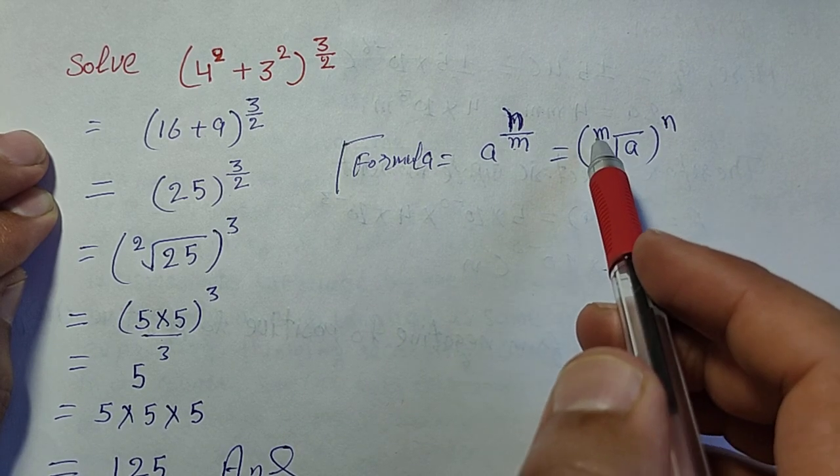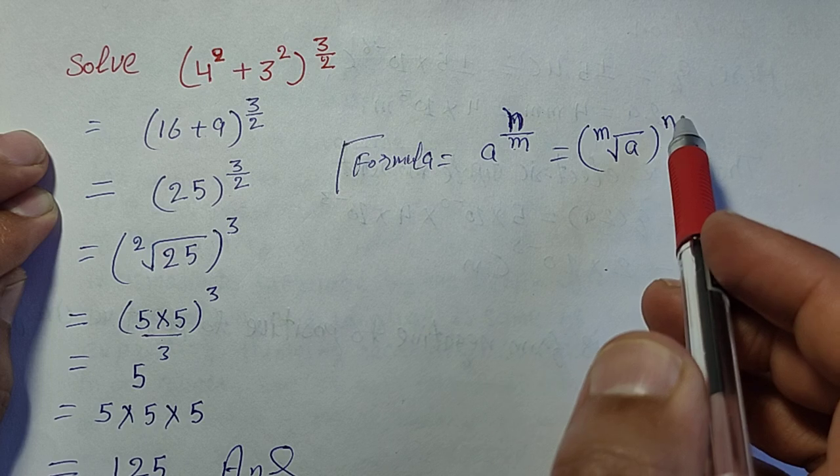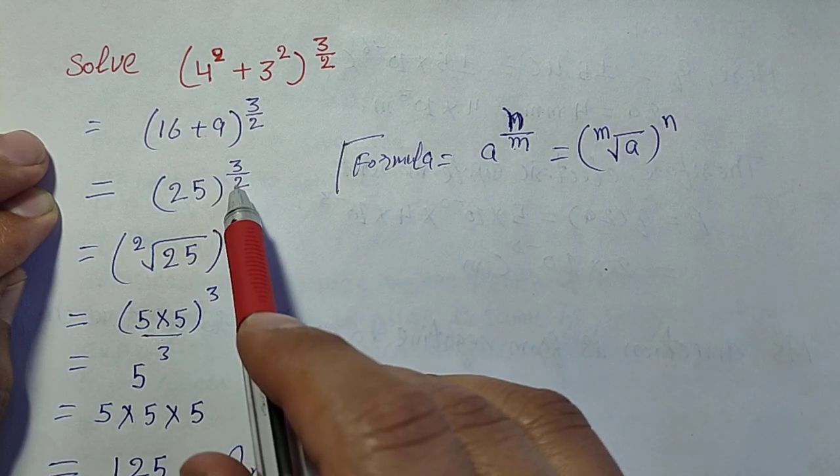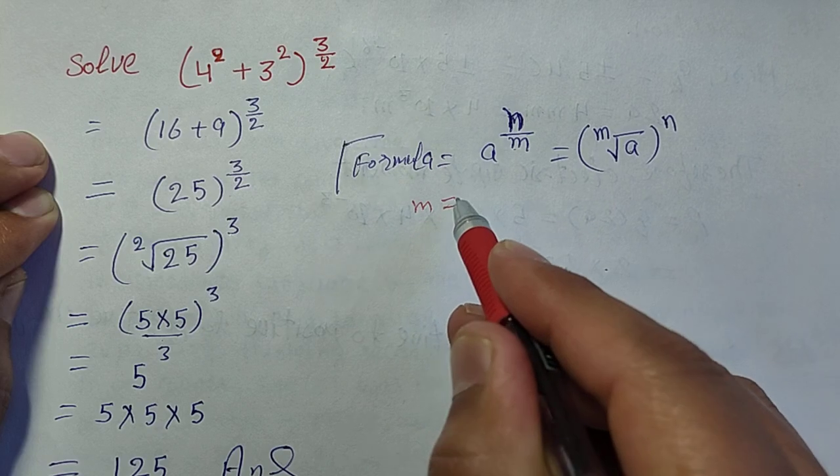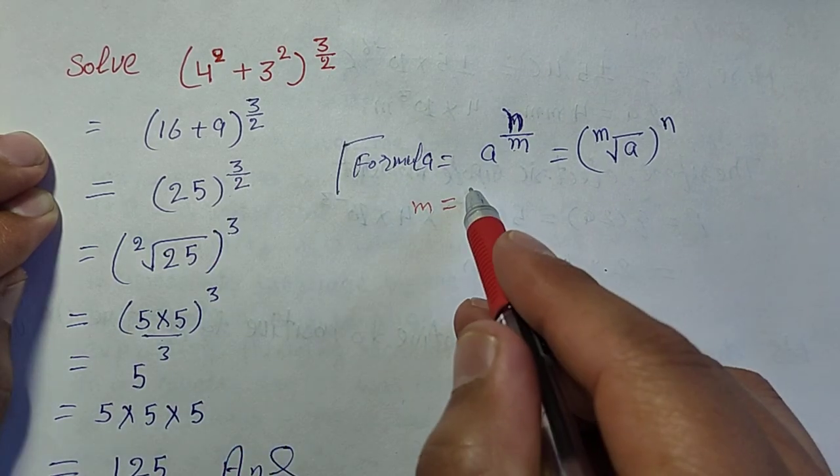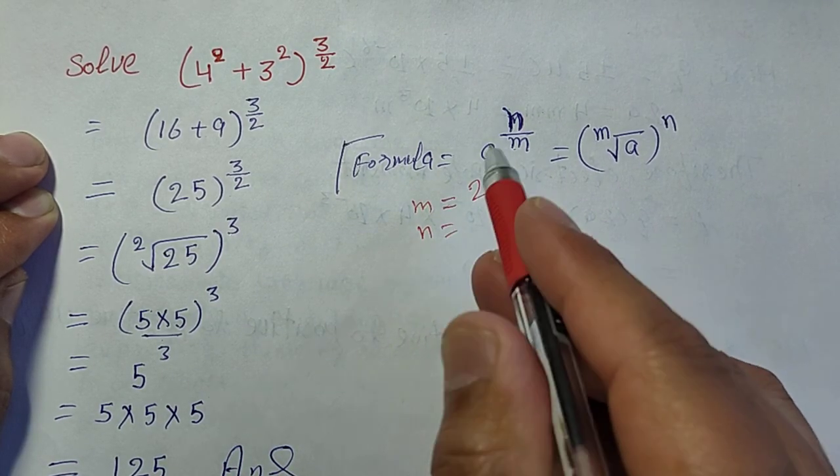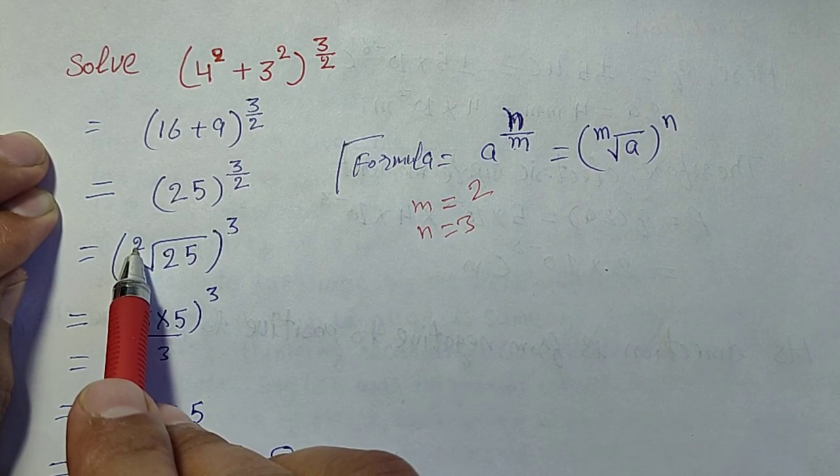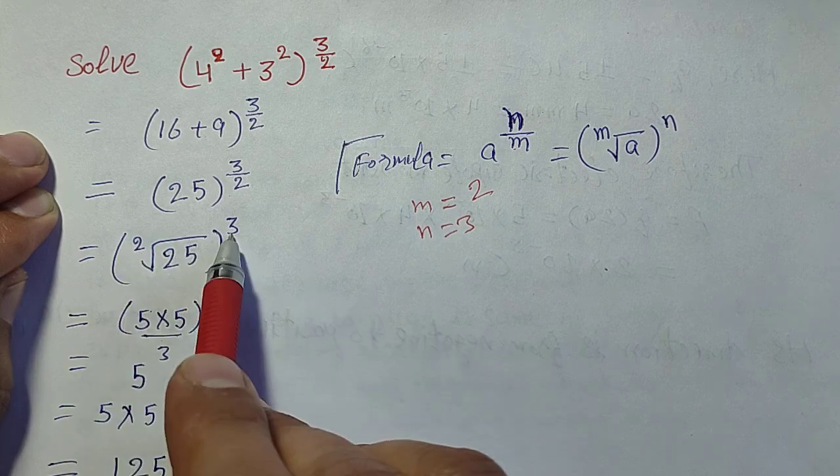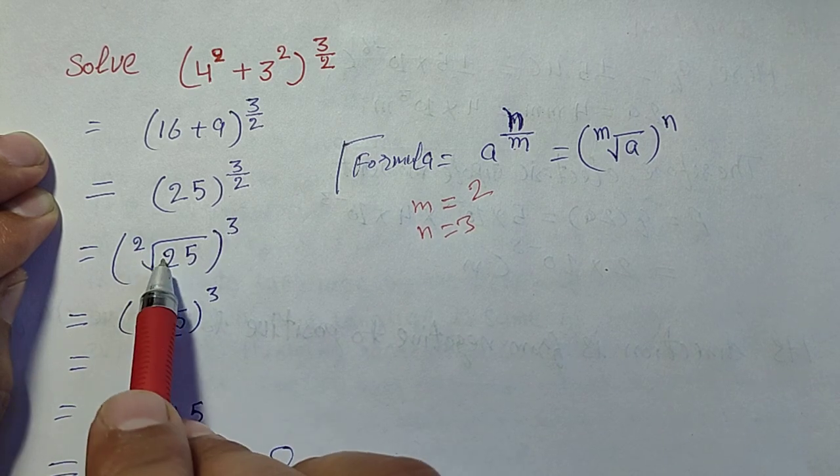So here m is equal to 2 and n is equal to 3. We have 25.